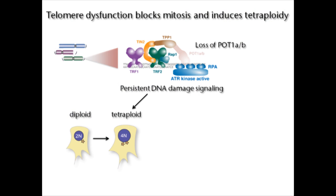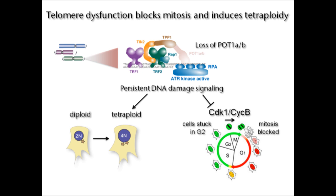When POT1 is absent from mouse cells that also lack the tumor suppressor P53, the cells enter end-reduplication cycles. The cells first linger in G2 and don't enter into mitosis, because CDK1-cyclin B is repressed by the DNA damage signaling coming from the dysfunctional telomeres.